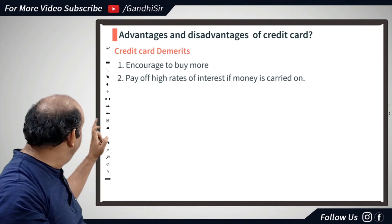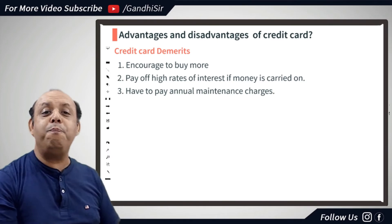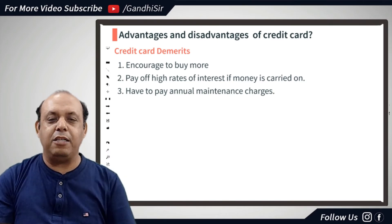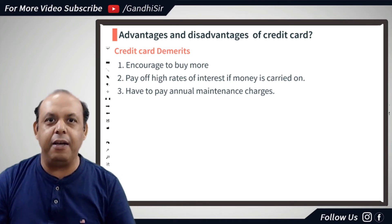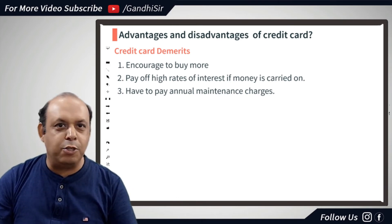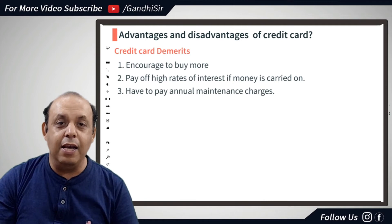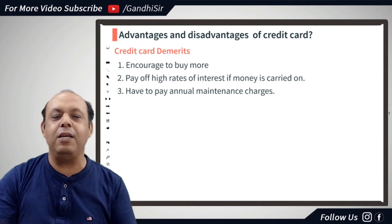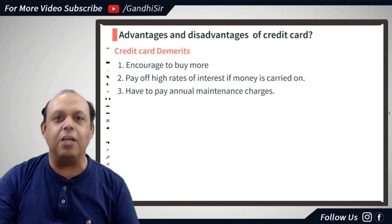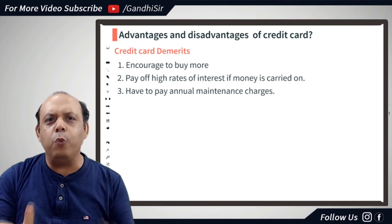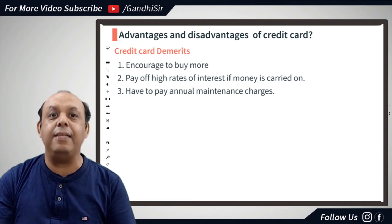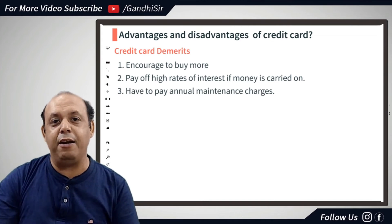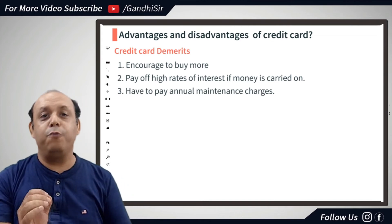The third disadvantage is that you have to pay annual maintenance charges. If you have a credit card or debit card, you know that the bank does not provide services for free. They charge you annually — what's called a maintenance charge. Unnecessarily, you have to pay 200, 250, or 300 rupees annually, which is a demerit for credit card users.